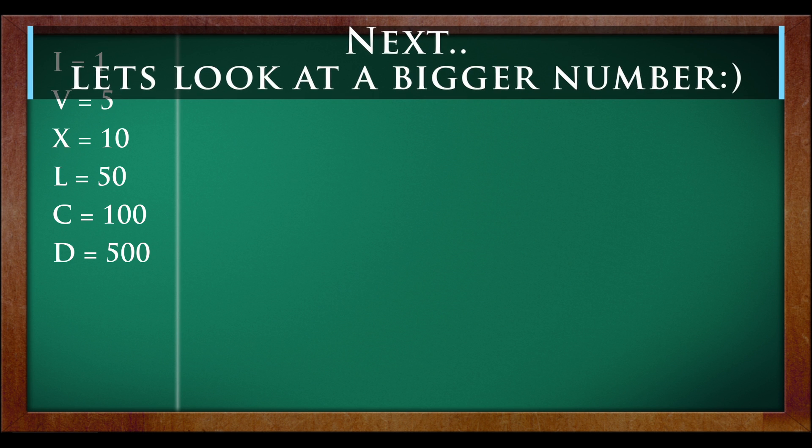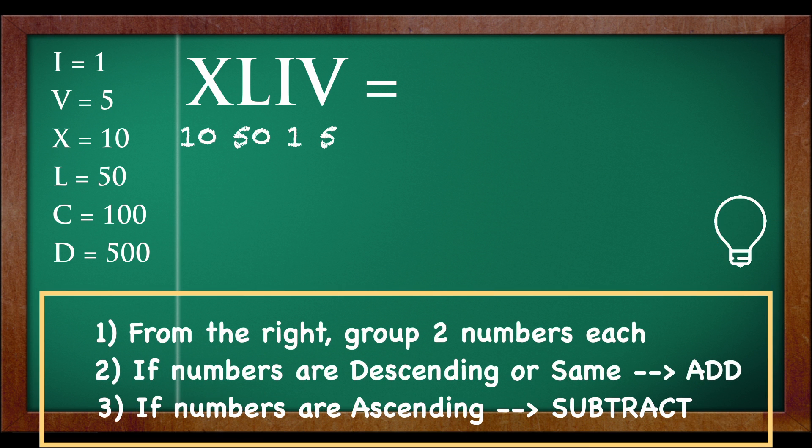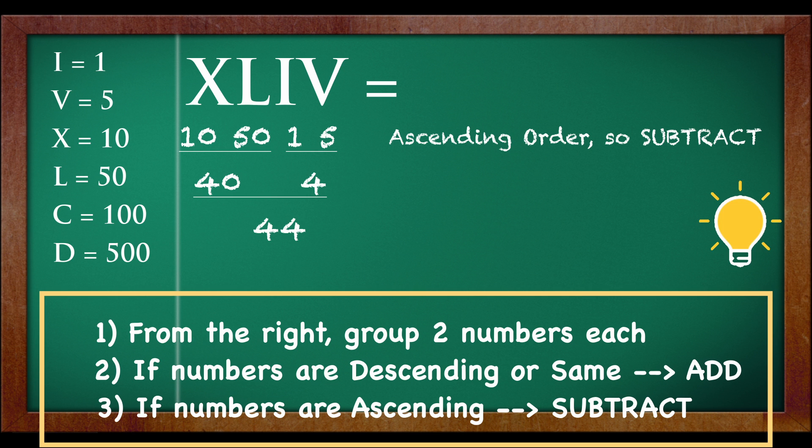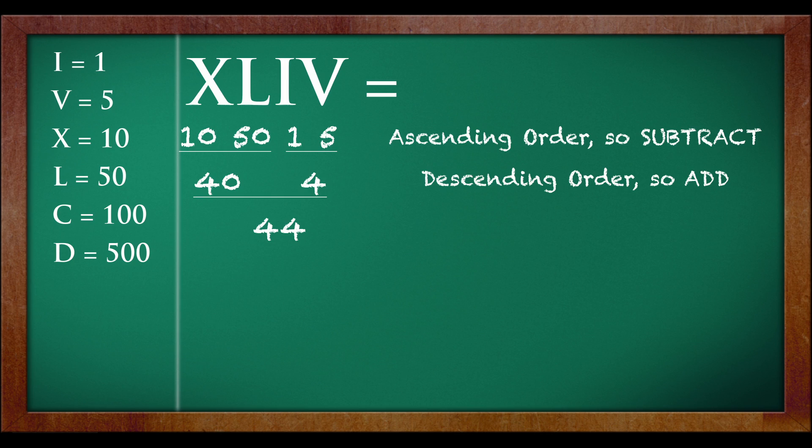Next, let's look at a bigger number: XLIV. Let's see if a formula works. Let's start from the right. Because it's ascending order, 5 and 1, we have to subtract them. 5 minus 1 is equal to 4. Similarly, because 10 and 50 are in ascending order, we should subtract them also. 50 minus 10 is equal to 40. 40 and 4 are descending. So, we just add 40 plus 4 is equal to 44.